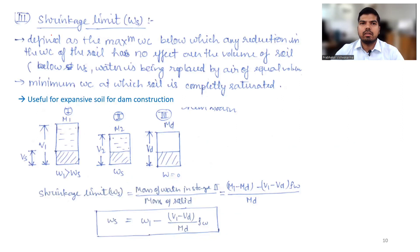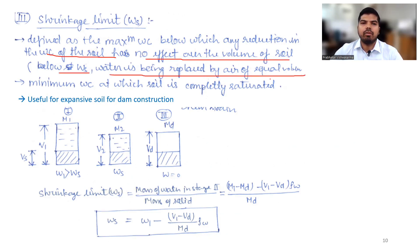The shrinkage limit is defined as the maximum water content below which any reduction in the water content of soil has no effect on the volume of soil. Below this shrinkage limit, water is being replaced by air of equal volume. The shrinkage limit is the minimum water content at which soil is completely saturated, and it is useful for expansive soils in dam construction.